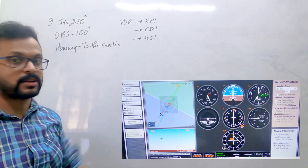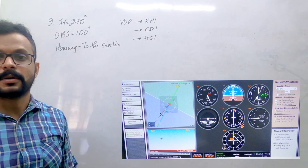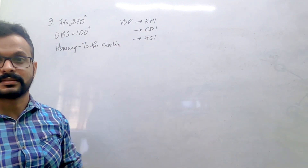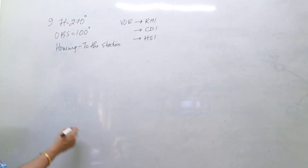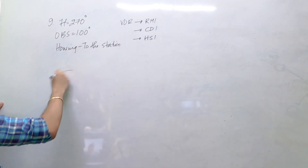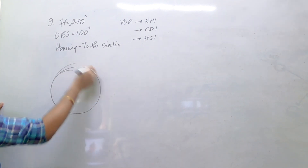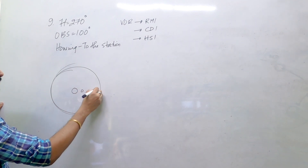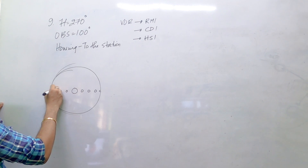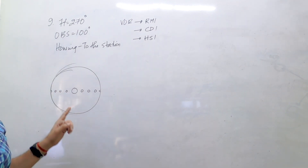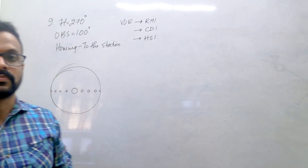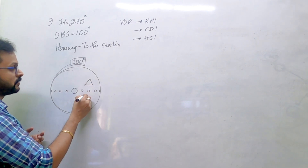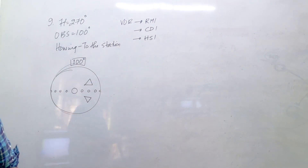In the last class I showed you that you can keep turning the aircraft at different headings but it is not going to change the OBS — the pilot will see exactly the same CDI indication. Let's draw the CDI indication here. If nothing is mentioned, we always use a 5-dot CDI: center, then first, second, third, fourth, and fifth dot. The full-scale deflection of a VOR CDI is 10 degrees. We have the TO flag and the FROM flag.